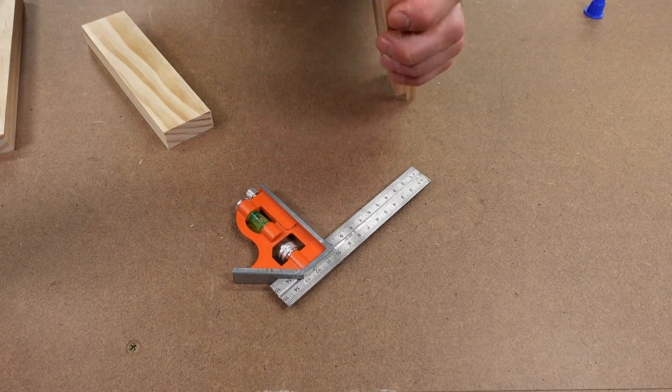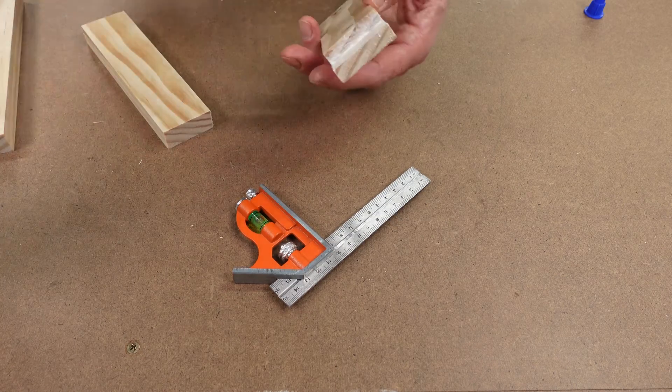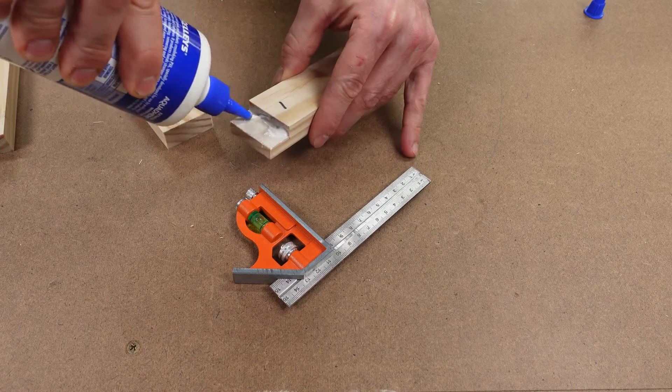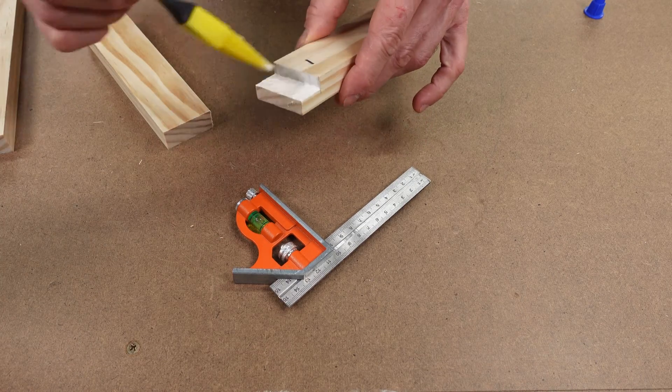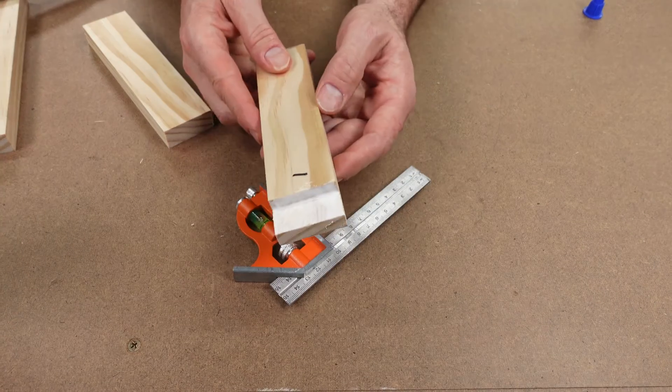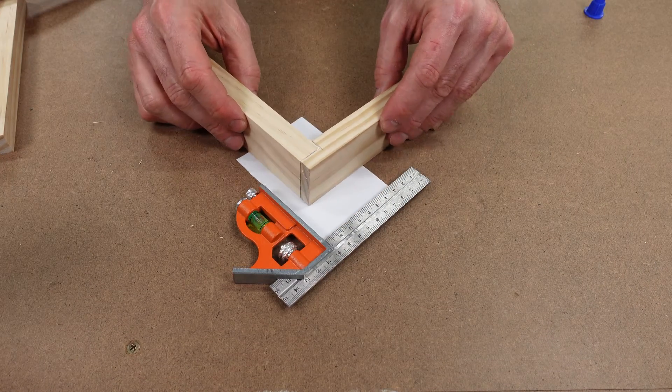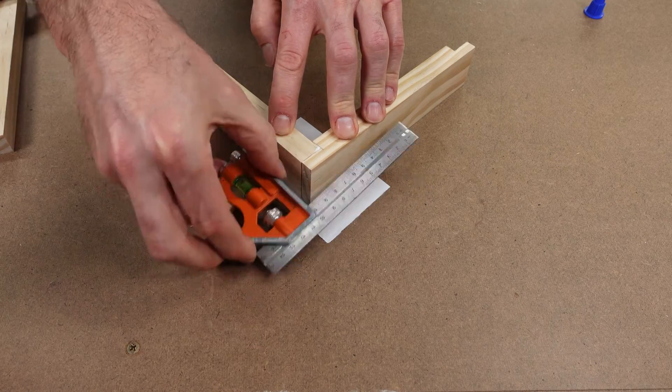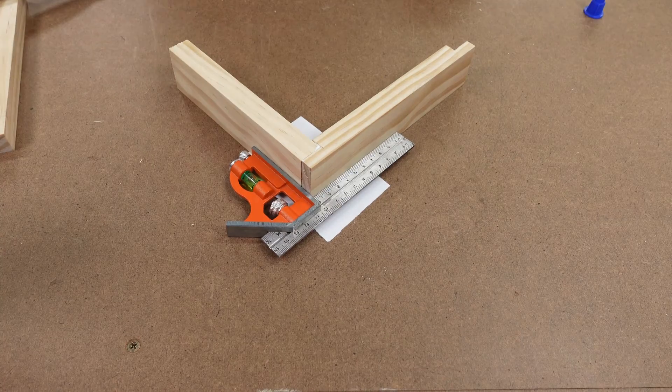Ensure there is enough glue for full coverage, but not too much that it would run off if you held it up at an angle. I'm going to place this on a small piece of paper so that any excess glue doesn't stick the joint to my bench.